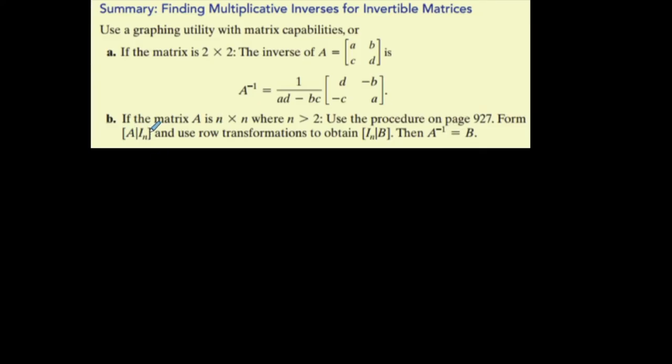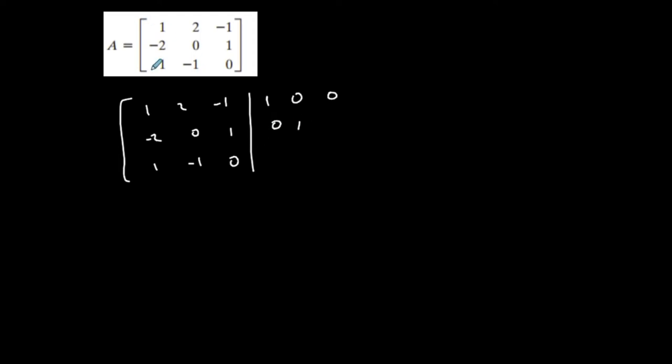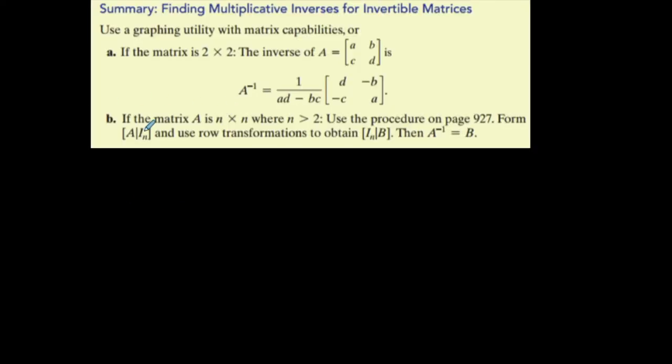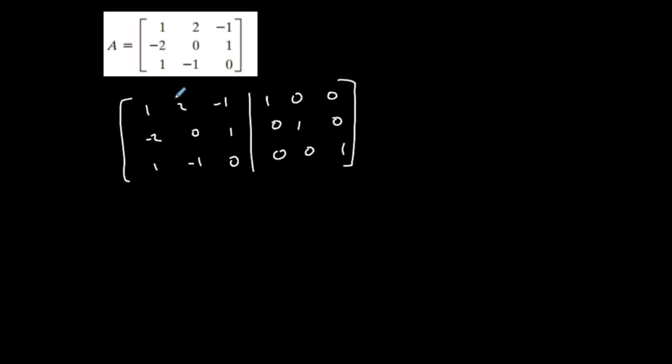Let's find the inverse of this matrix. First, write it in this form: on the left-hand side put the A matrix, on the right put the corresponding identity matrix, separated by a line. This is a 3x3, so I write the A matrix — 1, 2, negative 1 / negative 2, 0, 1 / 1, negative 1, 0 — on the left, and the 3x3 identity matrix on the right. Then I'll do row operations to create the identity matrix on the left, and whatever's left on the right is the inverse.